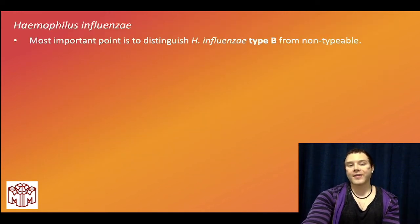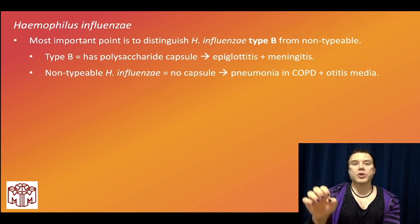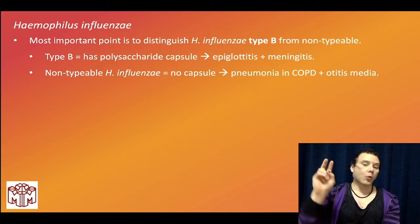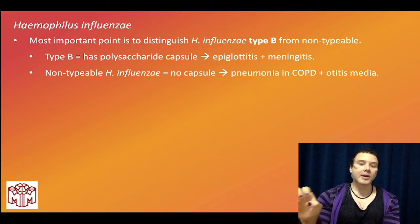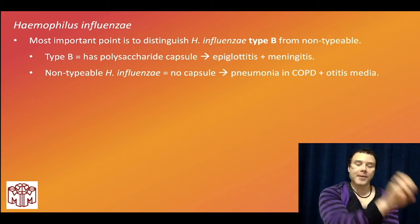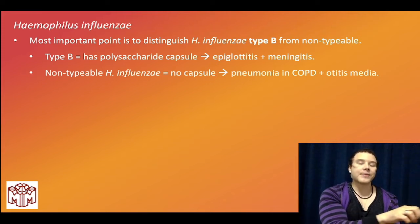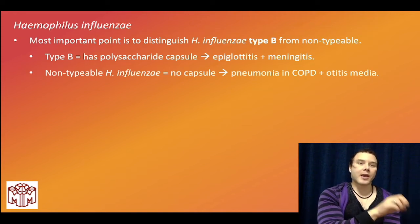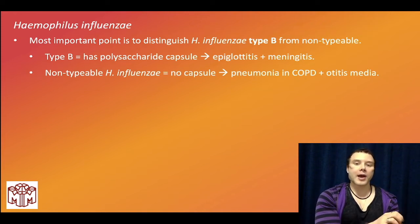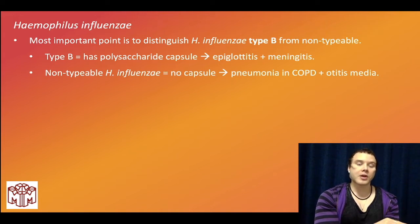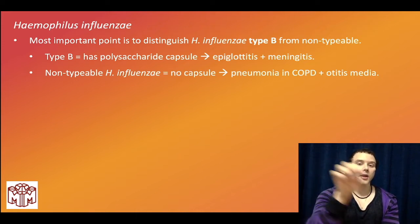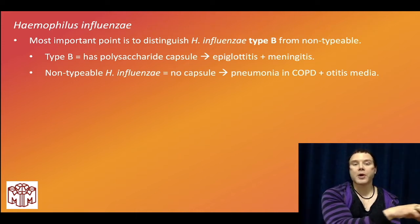Haemophilus influenzae — you need to know the difference between regular non-typable Haemophilus influenzae and Haemophilus influenzae type B. HIB has a polysaccharide capsule that we can vaccinate against. So patients who have splenectomy or autosplenectomy in sickle cell, we vaccinate against HIB, Haemophilus influenzae type B, Neisseria meningitidis, and Strep pneumo.